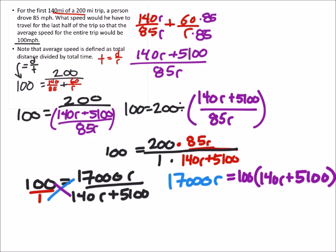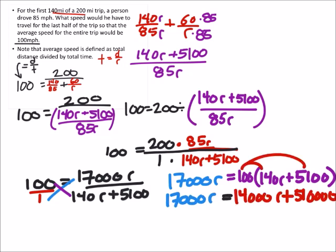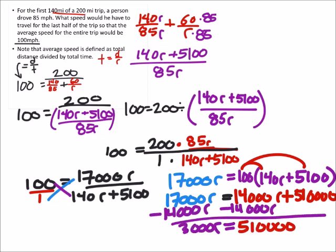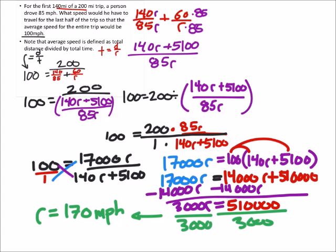So then we'll just multiply the 100 or distribute it into the parentheses. And that's what we have there. Let's go ahead and subtract 14,000R from both sides of the equation. And that gives us 3,000R. Again, R is the rate equals 510,000. And so we'll just divide both sides by 3,000. And that gives us that the rate is 170 miles per hour. And that right there would be our final answer.